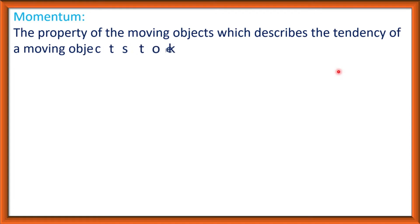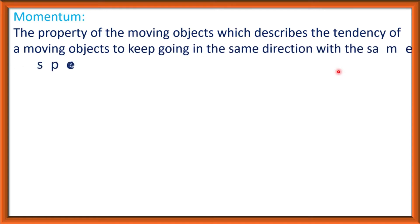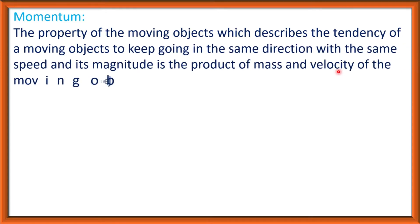Momentum. The property of the moving objects which describes the tendency of a moving object to keep going in the same direction with the same speed. Its magnitude is the product of the mass and velocity of the moving object. That means momentum is a property of the moving object — it is the quantity of motion. Momentum is the product of mass and velocity of the moving object.